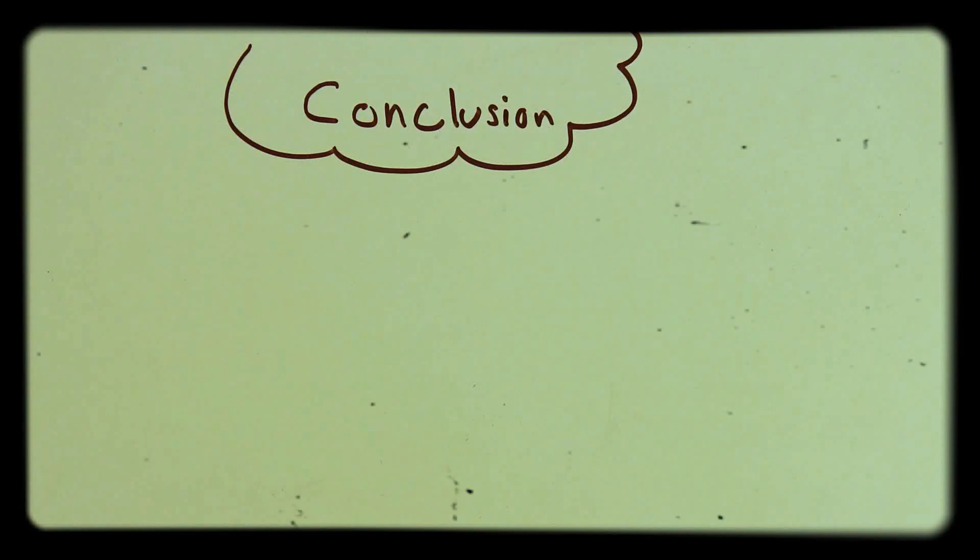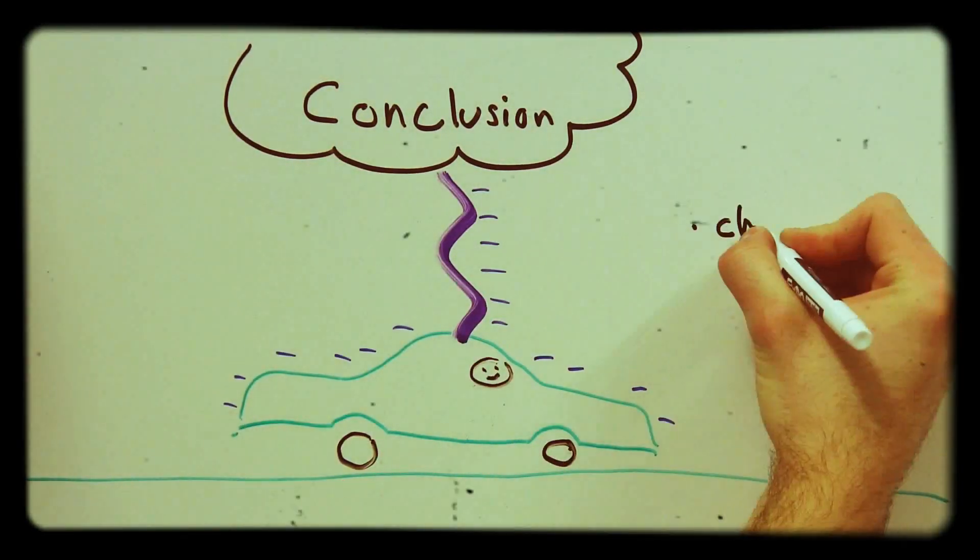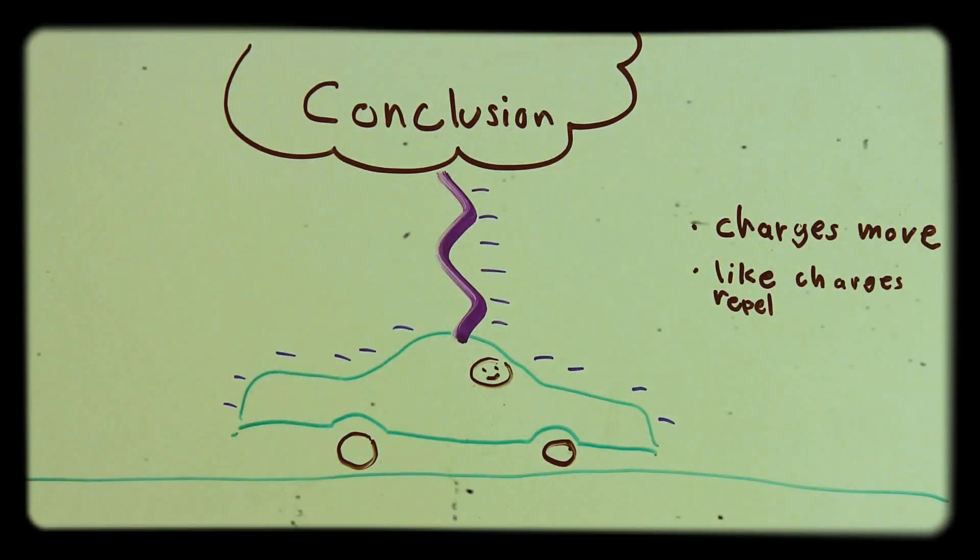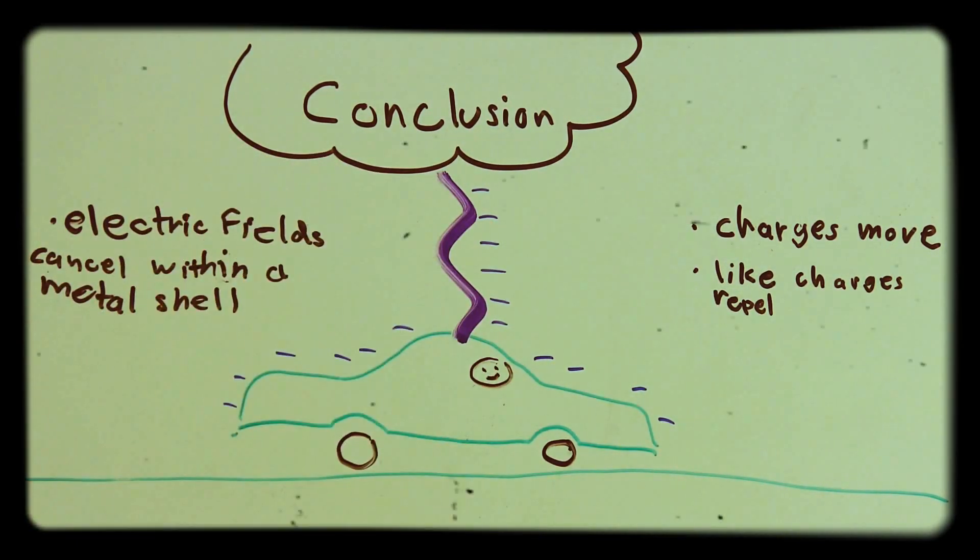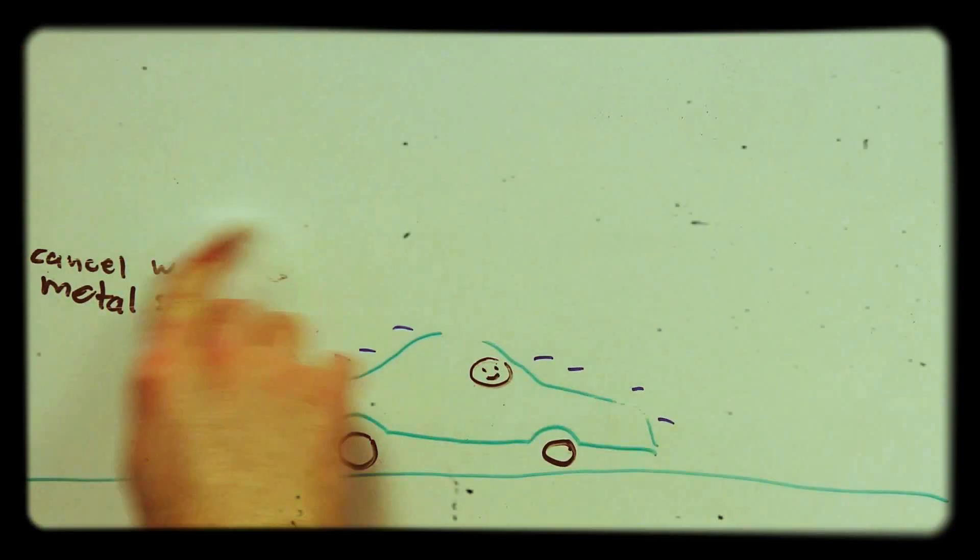So there you have it. Lightning is just a movement of charges from one place to another. And because like charges repel, if they hit a metal surface, like your car, they will spread around the outside and won't go in at all. You are completely safe. Don't keep driving though. The strike can damage electrical systems in the car.